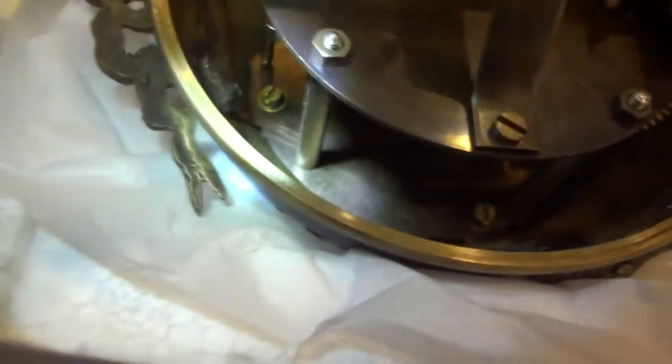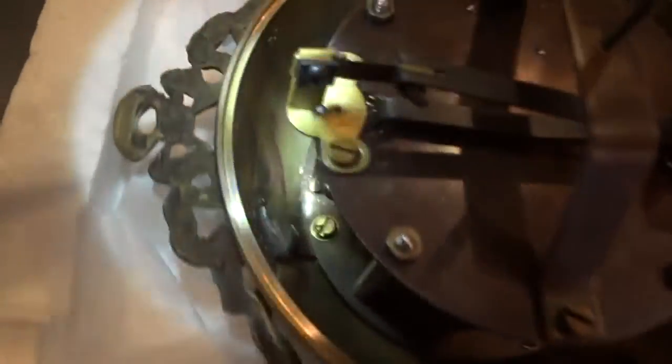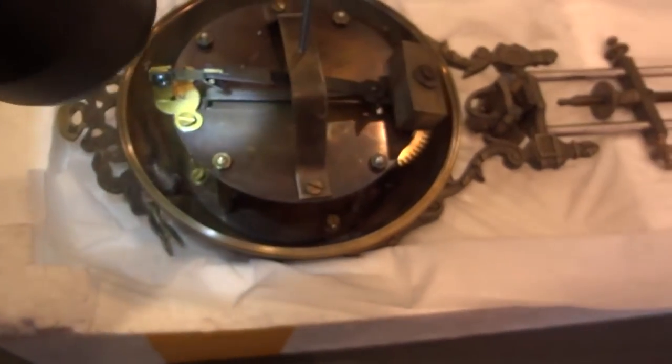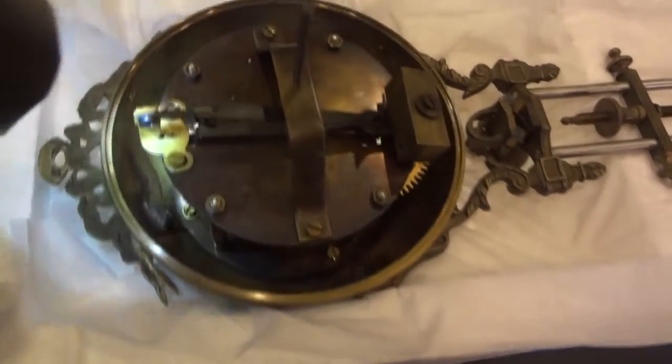You should not need to remove the clock hands to do this, but there's three screws—there's one here, one here, and one on the back side here. Those three screws are actually holding the movement to the front of the ball. So if you were to loosen—I would not remove but I would loosen—those three screws...